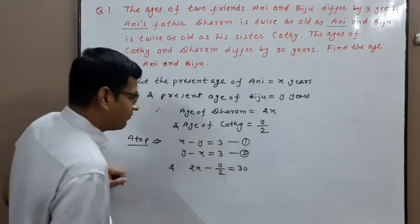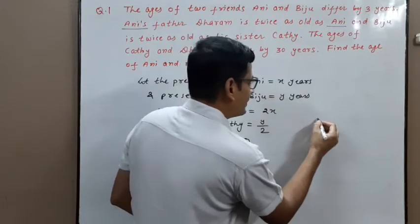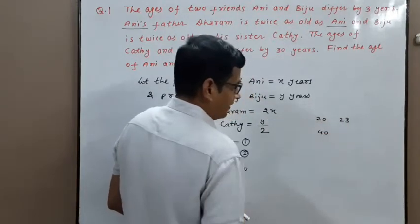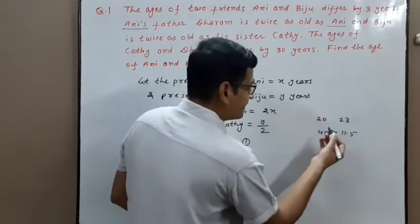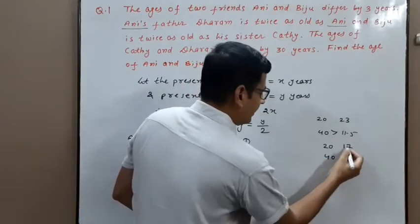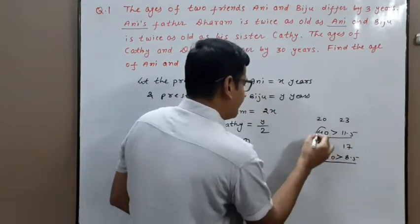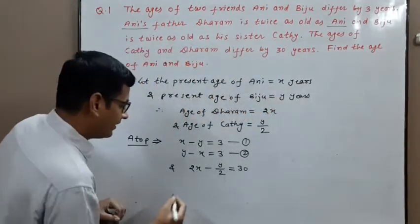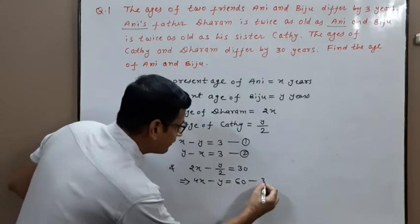This is clearly age of Dharam is more than Cathy — Dharam's age is 2X and Cathy's age is Y/2 — so 2X minus Y/2 equals 30. We can verify: for example if Ani is 20 and Biju is 23, Dharam is 40 and Cathy is 11.5, so Dharam is always greater than Cathy. Multiplying through by 2: 4X minus Y equals 60, giving equation number 3.